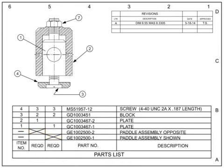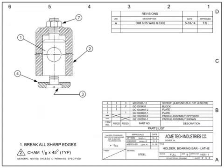For the assembly labeled Paddle Assembly Shown, the quantity column is on the right. The quantity column for the Paddle Assembly Opposite is on the left. In summary, blueprints are the way in which technical ideas and information are communicated from the design team to the technicians and manufacturers tasked with implementing the design.